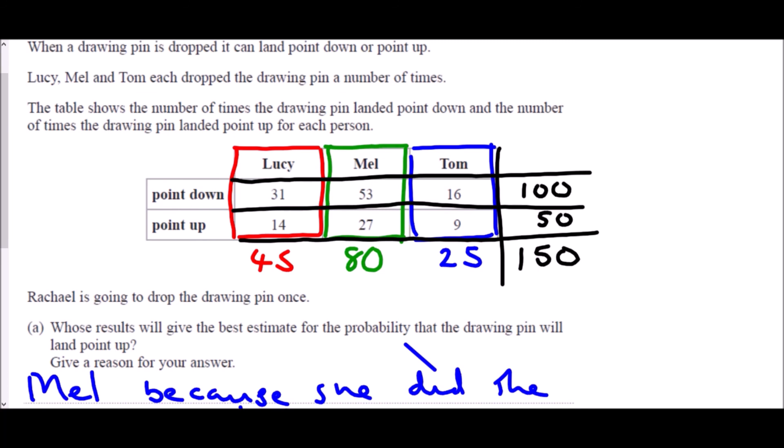And so what we then want to do is we want some probabilities. So we want to find an estimate for the probability of point down - the relative frequency. Well, the relative frequency of point down is 100 out of 150. Now if we simplify that, that's actually two thirds. If we divide them both by 50, it's two thirds. And point up, well that is going to be the rest of them - 50 out of 150 or one third.